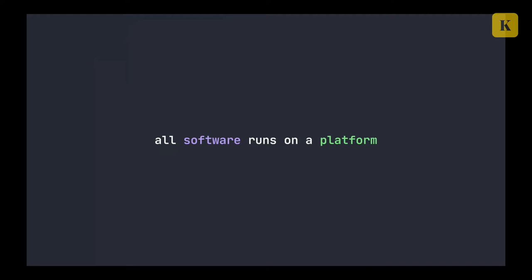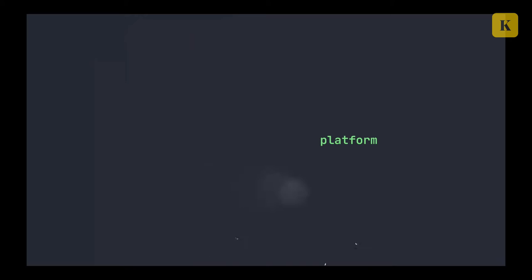Let's start with some definitions. First of all, all software runs on a platform. What do we mean by platform? A platform is a system mostly composed of two or three parts. I want to think of platforms as something like a language — a programming language — and then on top of that language there are other things, like an API or framework that creates a higher-level language.